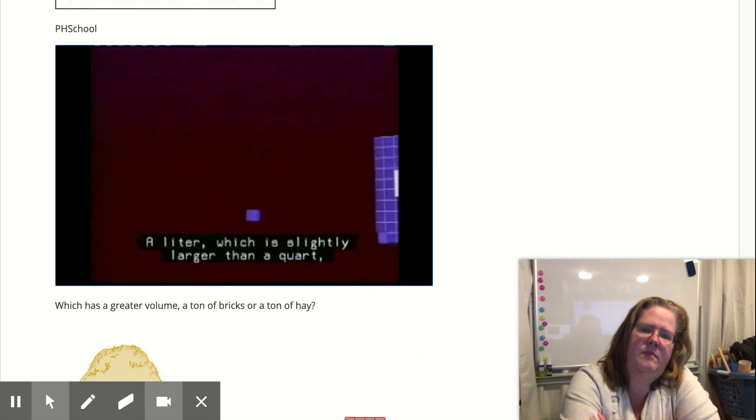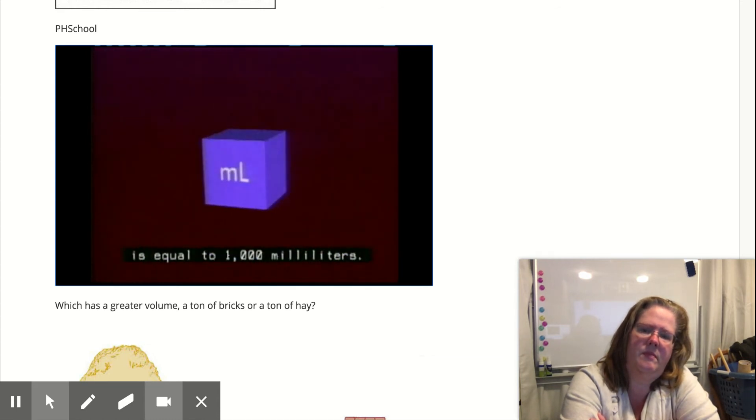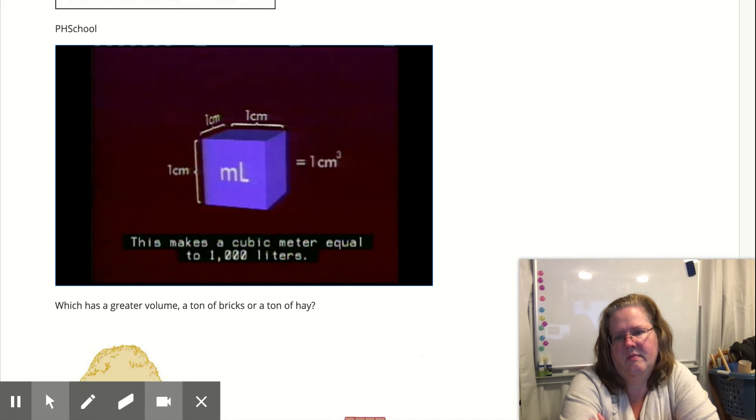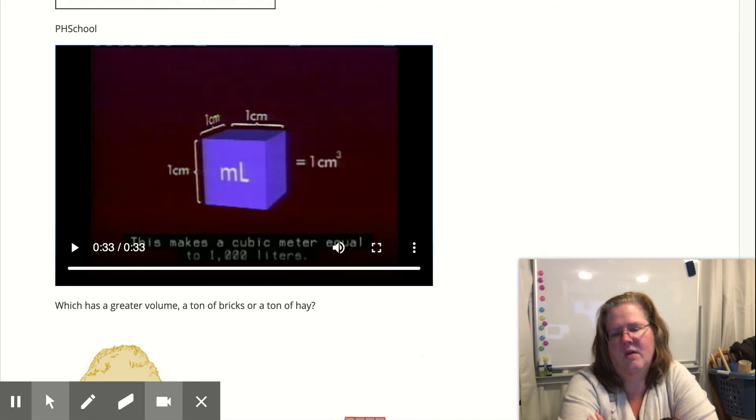A liter, which is slightly larger than a quart, is equal to 1,000 milliliters. And a milliliter is equal to one cubic centimeter. This makes a cubic meter equal to 1,000 liters. Okay.